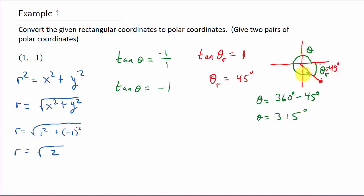Okay, and so that's theta there. So my polar coordinates, that's square root of 2, 315 degrees. Now this is not the only answer.